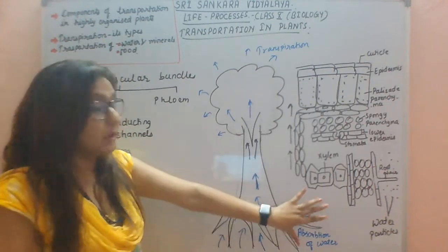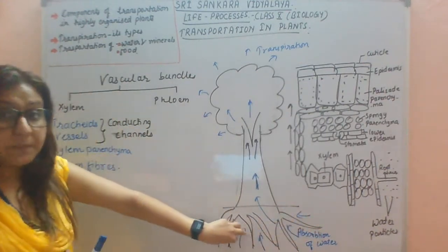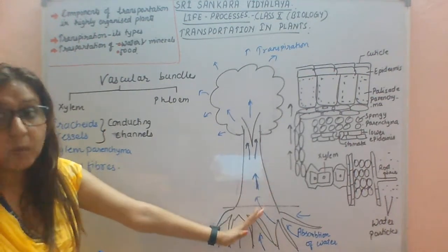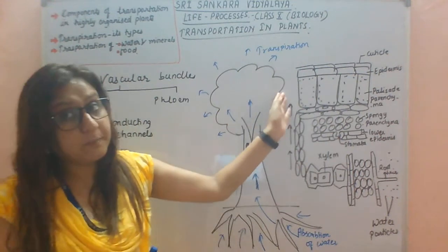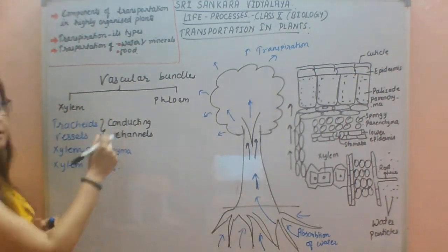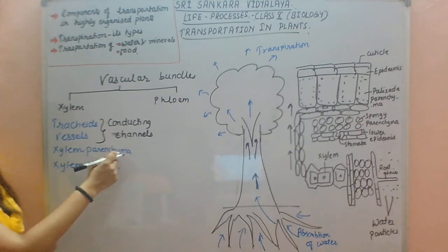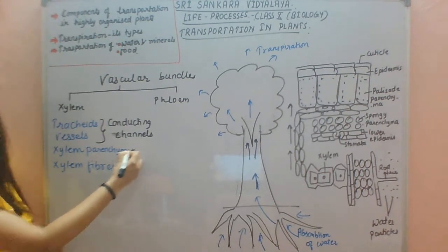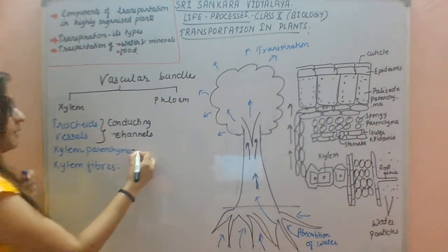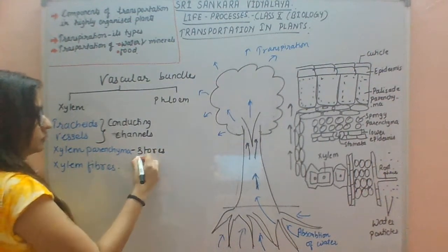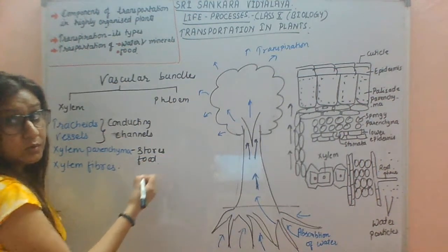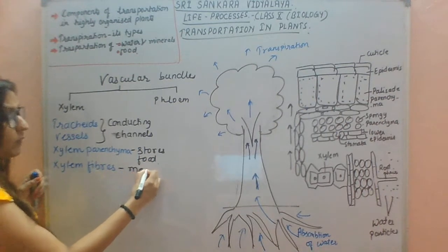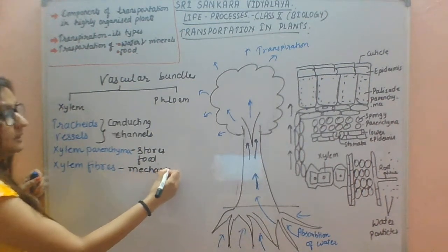As I mentioned, xylem absorbs water — the roots absorb water and minerals — and transports them to the different parts of the plant body. Tracheids and vessels are the two main conducting channels. Xylem parenchyma stores food, basically meant for the storage of food. Whereas xylem fibres help to provide mechanical support.